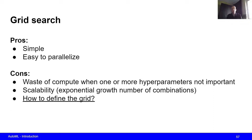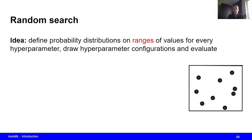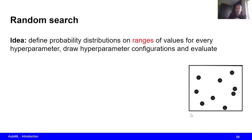This last issue is what random search actually solves. In random search, instead of defining sets of values that we want to try out, we simply use ranges of hyperparameter values over which we want to search. Instead of specifying discrete values on the x-axis, we take the entire admissible range of values and simply sample from that range according to some probability distribution defined over this range.